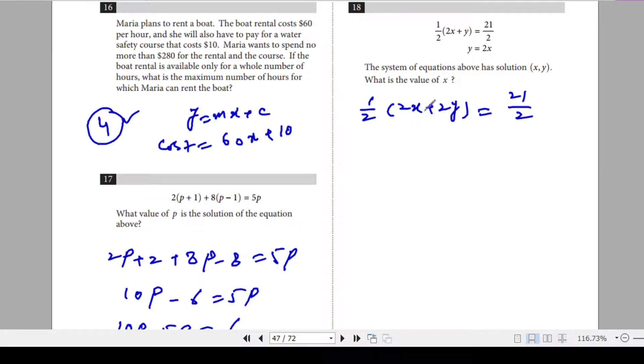So you can factor out 2. Sorry, this is 2x. I made this mistake. So this should be 2x, because y is 2x. And that is equal to 21 over 2. So this is 4x, right? So you can cancel these two out. 2x is equal to 21 over 2. Divide by 2 on both sides. That will give us 21 over 4. You can write 21 over 4.